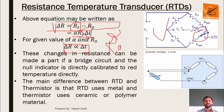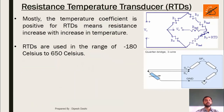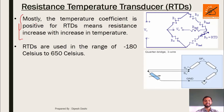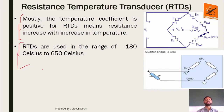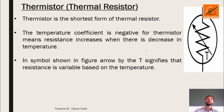The main difference between RTD and thermistor is that RTD uses metal whereas thermistor uses ceramic or polymer material. The temperature coefficient of RTDs is mostly positive, meaning resistance increases with increase in temperature. RTDs are used in the range of -180°C to 650°C. In a one-mark question, if asked for the temperature range of RTD, the answer is -180°C to 650°C.